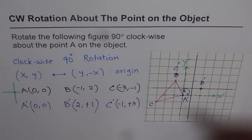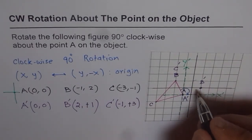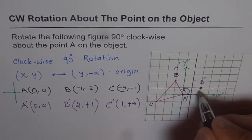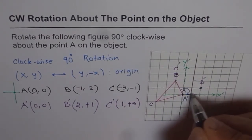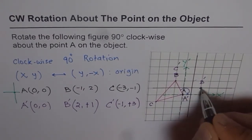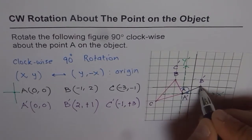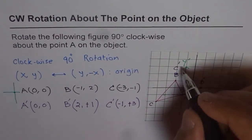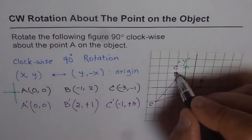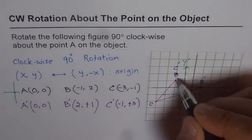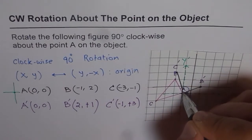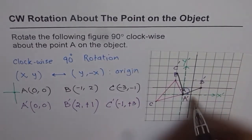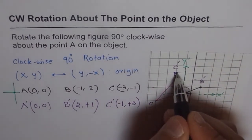Let me use black to draw, since we need to overlap the original. A' is at the same point. Here is B' — let's join them. Then C' is there, and we join C' with A' and B' to complete the transformed triangle.